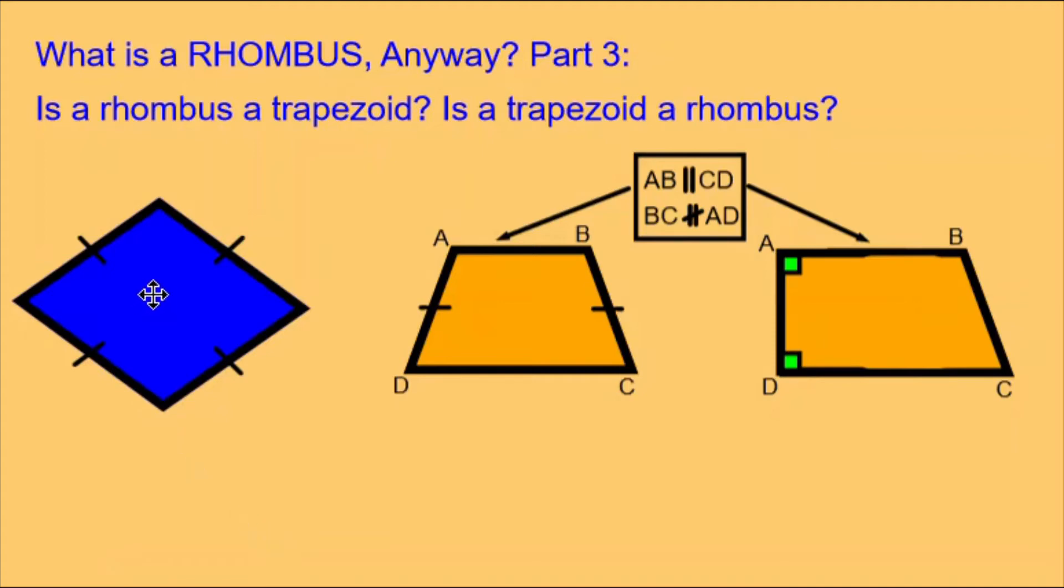Here we have a blue rhombus. We can see it is a rhombus because it has these little lines that show all four sides are congruent. That's what makes it a rhombus.